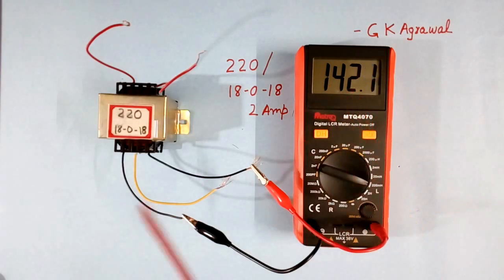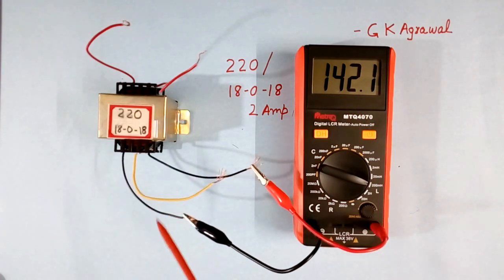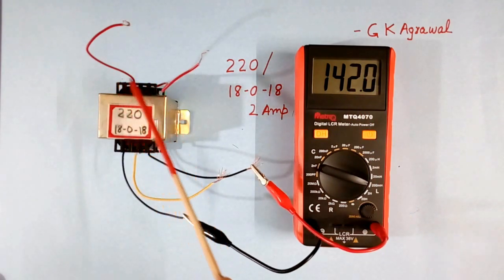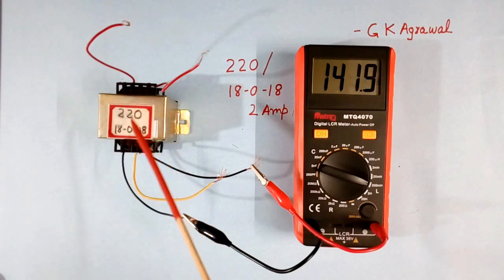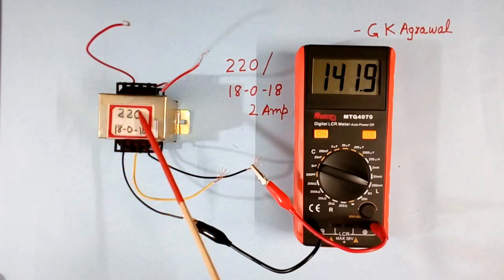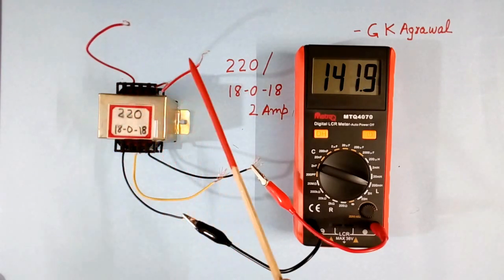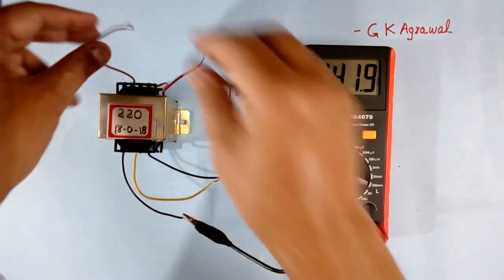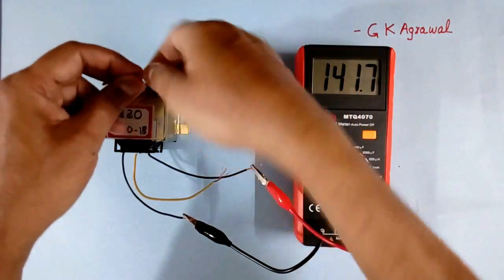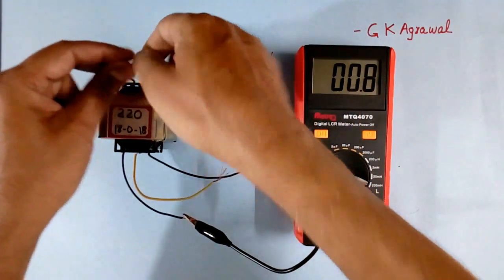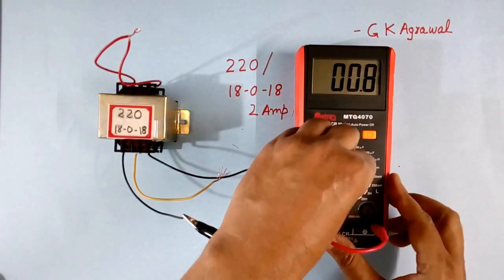But if we use it like this, very high voltage will come here. So we should never use a transformer as an inductor like this. We should always short the primary wire. So I will short again.